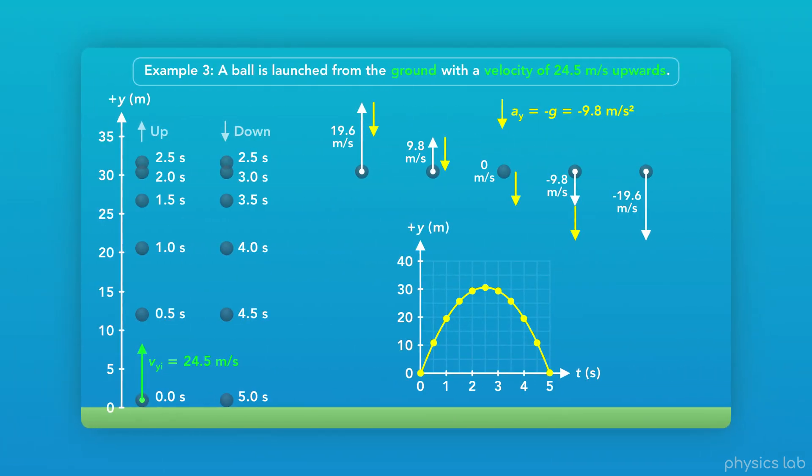In the last video, we learned about one-dimensional projectile motion where an object only moves up and down. 2D projectile motion just adds a horizontal velocity, and it's very similar to 1D projectile motion, so watch that video if you haven't already.